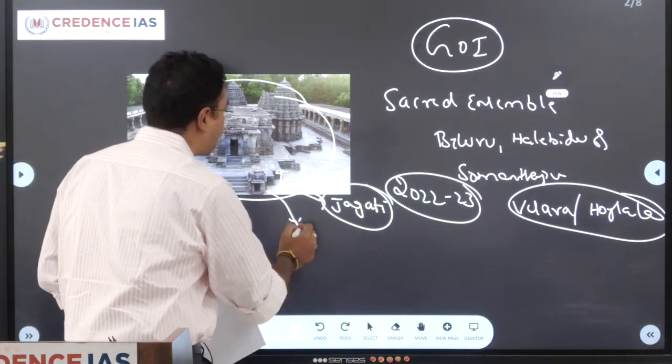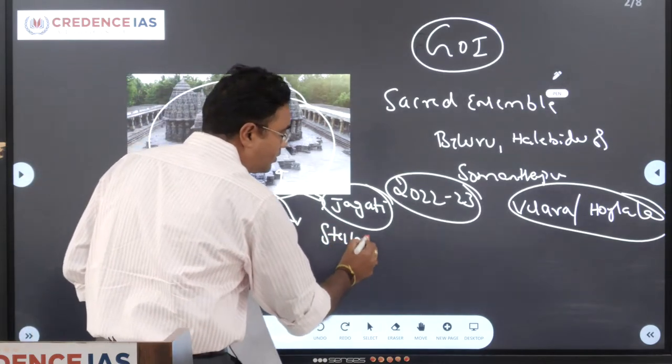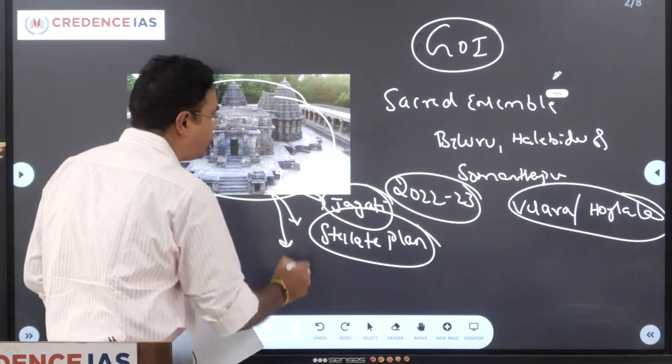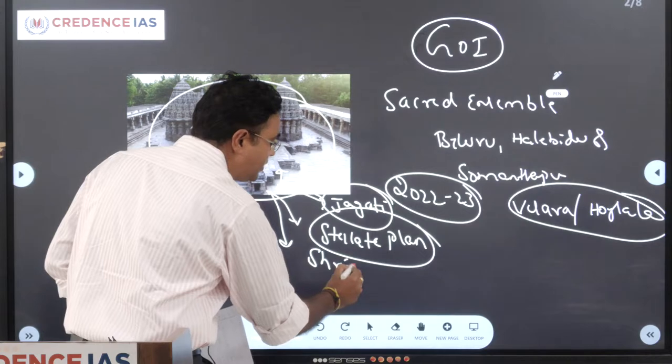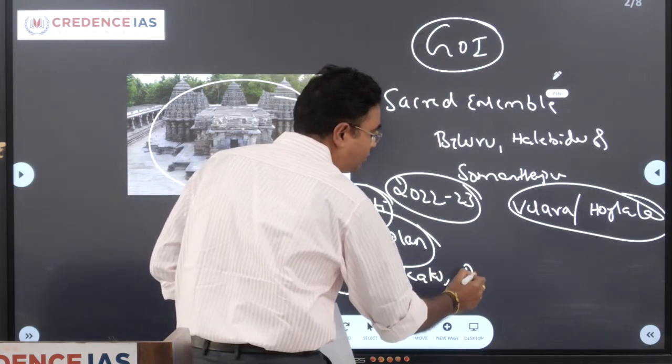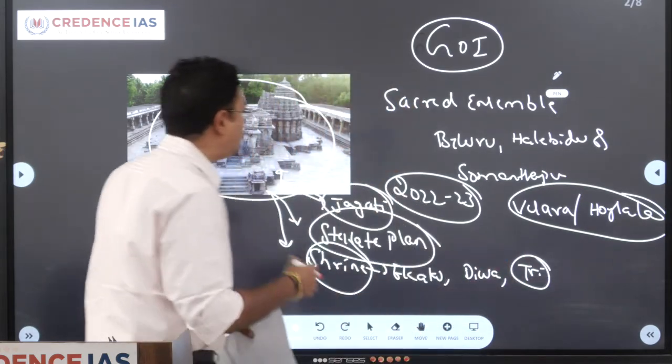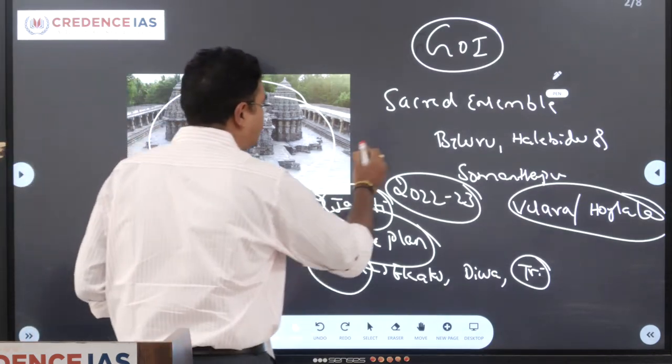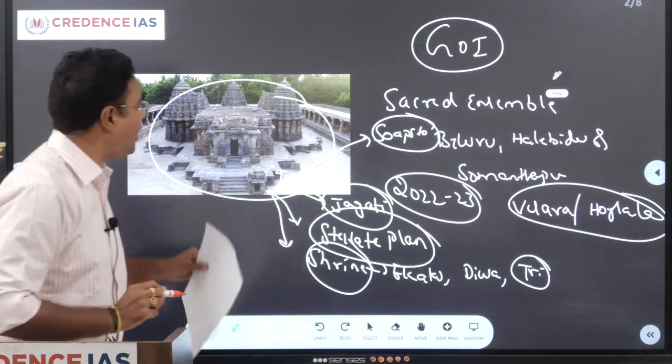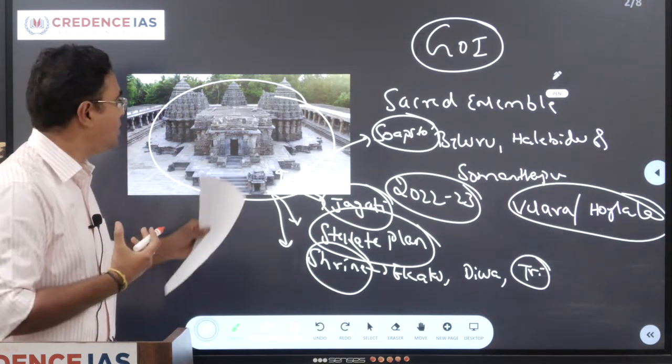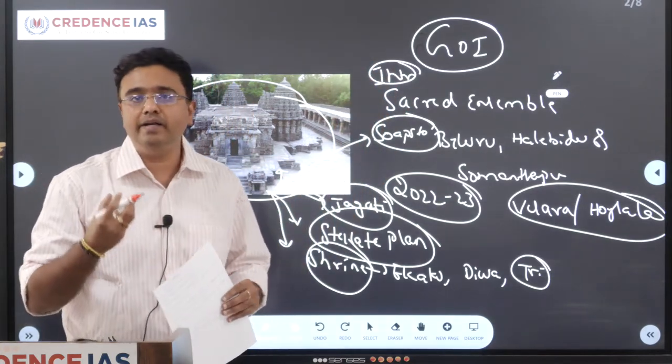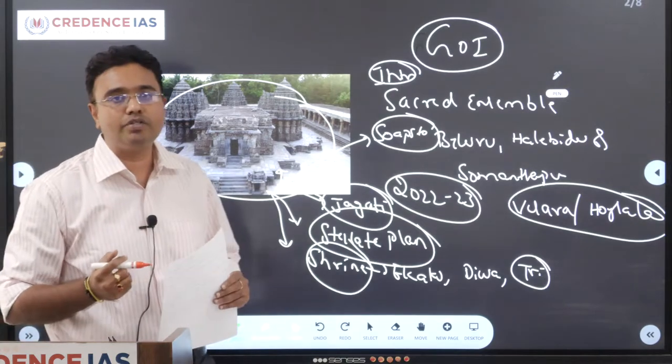This Jagati is used as a procession or ambulatory passage for the devotees to circumvent the temple. One more important aspect is the stellate plan of architecture. All the temples are designed in a star-shaped structure. These temples have unique shrine principles, which means each temple may have a single shrine we call Eka Kuta, if it has two shrines it's called Dvi Kuta, if it's three shrines it's called Tri Kuta and so on. The stone used in the construction of these temples is soapstone. One more unique feature is that the architecture of the temples and other monuments are intricately designed where we can see various minute details are finely designed.